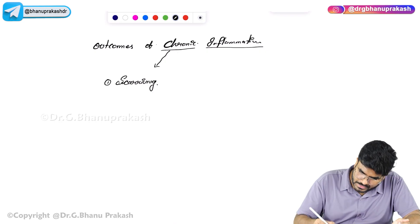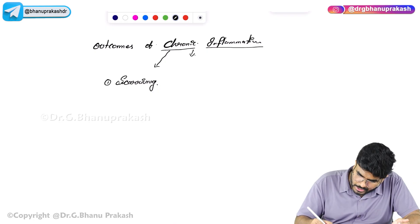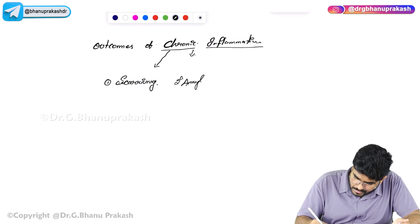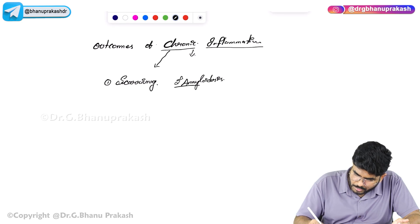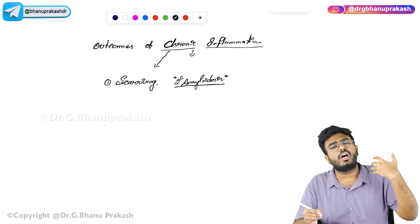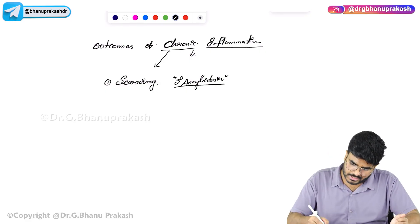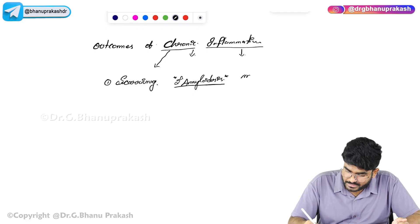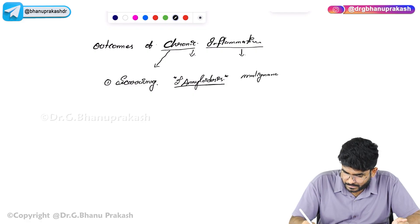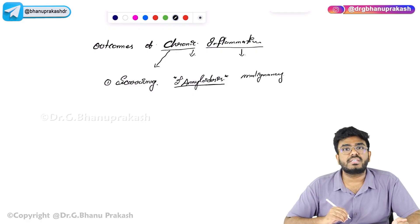The second outcome is amyloidosis — secondary amyloid deposition in the area of inflammation. Usually with all inflammatory disorders, there is a risk of amyloidosis. And the third outcome, the dangerous one, is malignancy.